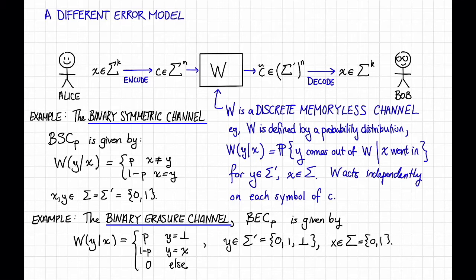This model where w is a random channel is extremely important, extremely natural, and extremely well studied. And to a large extent, we're just not going to pay too much attention to it in these videos — we're mostly going to focus on the adversarial case. However, in this video and the few right after it, we will do a quick introduction, because these models are important.